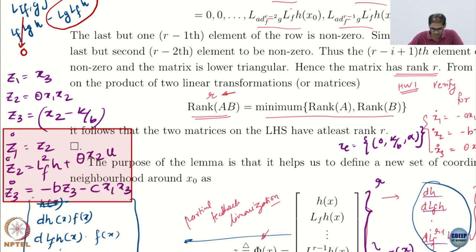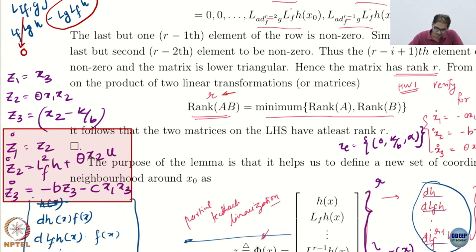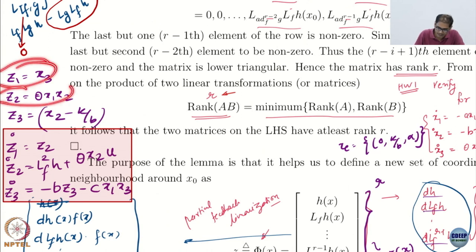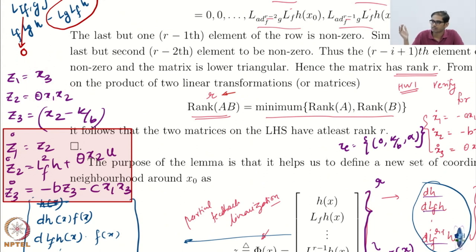You see this has a nice structure. If psi is equal to zero, that means Z1 and Z2 are zero. Notice Z1 is X3, Z2 is theta times X1 and X2. So Z1, Z2 equals zero means X3 is zero and X1 or X2 is zero.